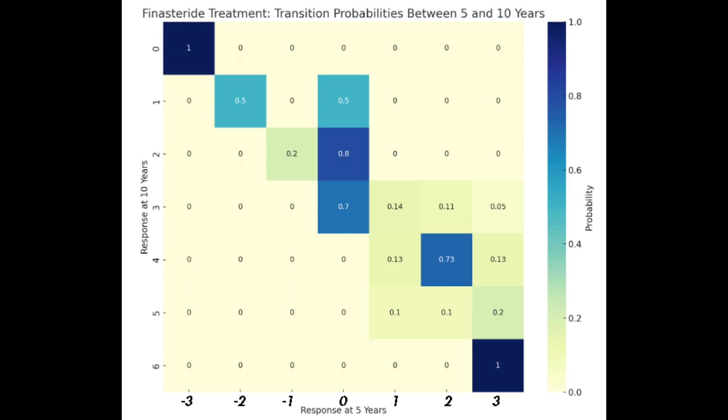This cell has a probability of 0.14. This indicates that there was a 14% chance that patients who saw no change at the 5th year mark would experience improvements by the 10th year mark.